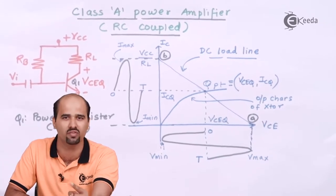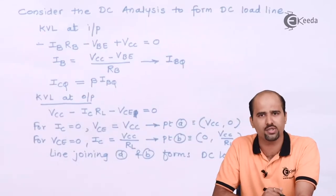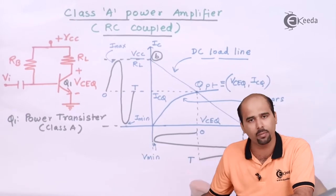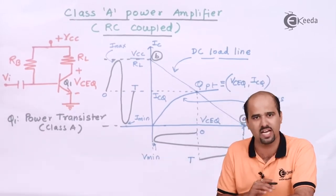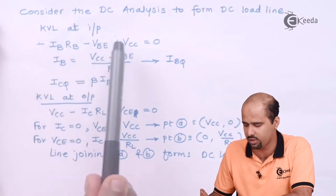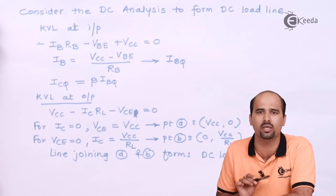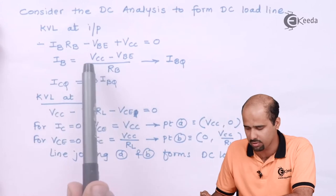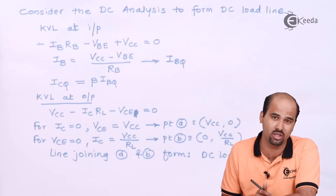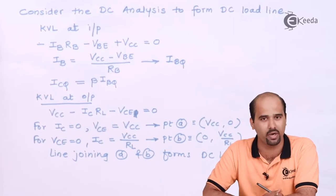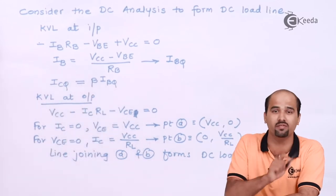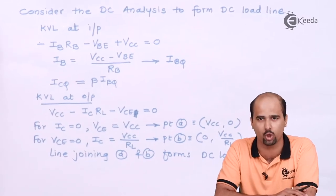Now let's do the mathematical analysis. Applying KVL at the input side of the circuit gives: -IB·RB - VBE + VCC = 0. From this, the Q-point parameter IBQ = (VCC - VBE) / RB. We also have the hFE (beta) rating from the power transistor's datasheet. Multiplying beta by IBQ gives ICQ — the first parameter of the Q-point.